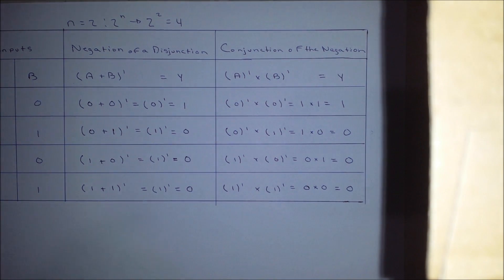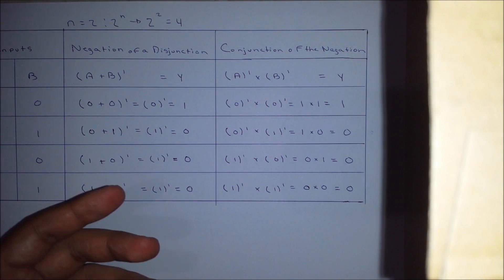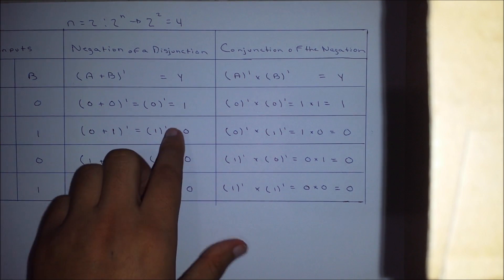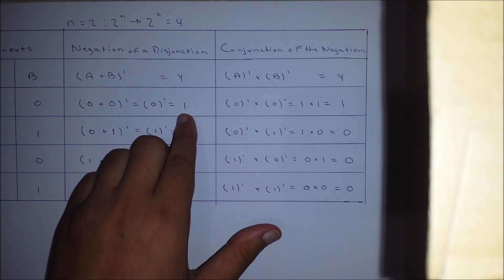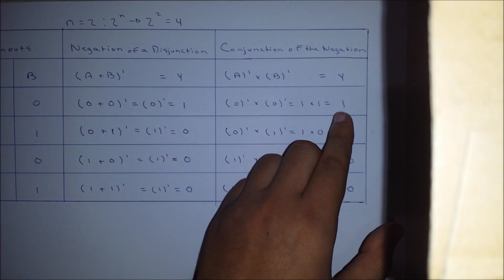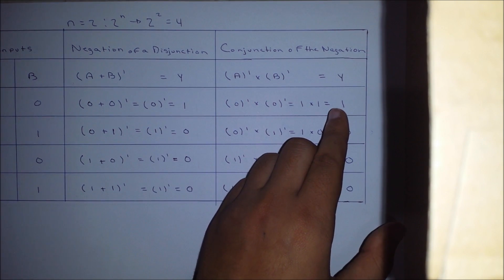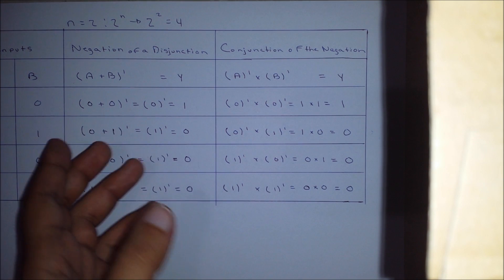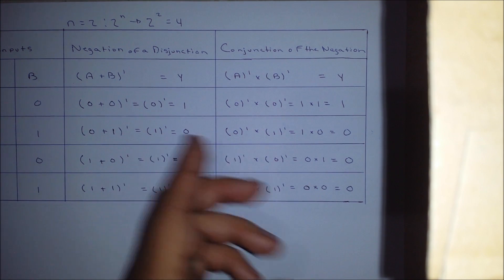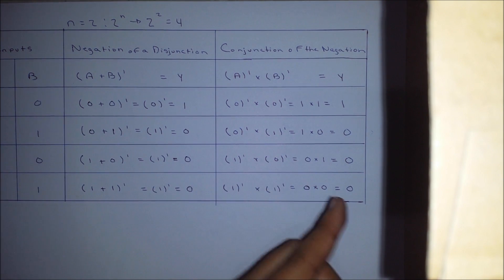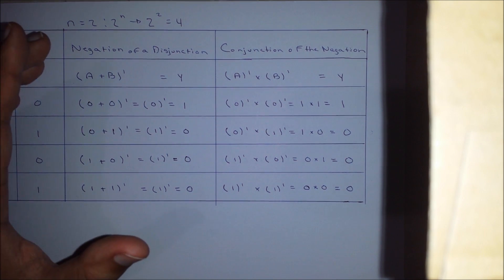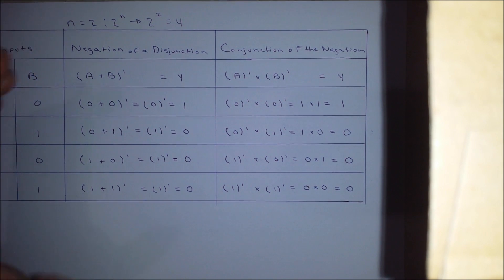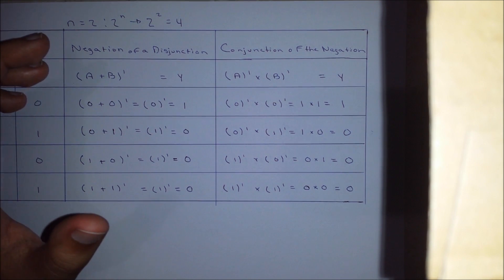Again, like in the past table, you can see that each row has the same result as its matching column, meaning that De Morgan's laws are indeed correct.